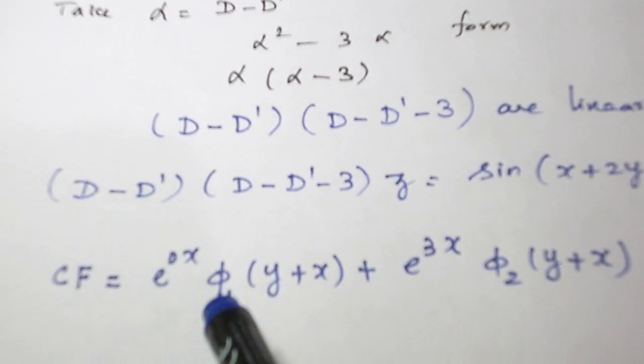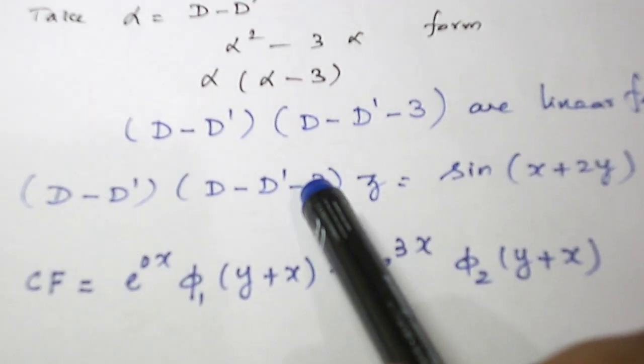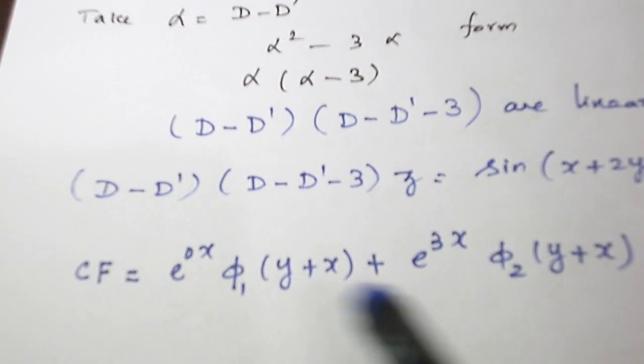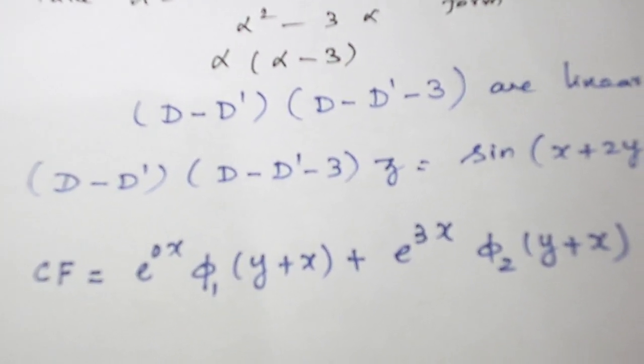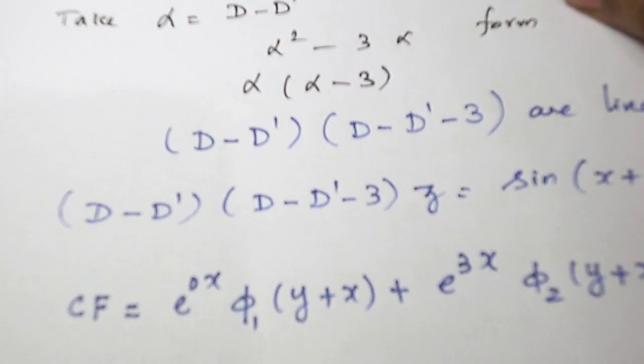So e power 0x, phi 1 of y plus x plus e power 3x, phi 2 of y plus x is the contribution. So complementary function is this one. And e power 0x is 1, so we need not write it.